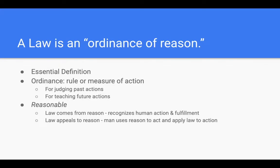That's essentially what it means for a law to be reasonable. Law first and foremost should come from reason, meaning a law should recognize human action and its fulfillment. The human person is directed by reason to the fulfillment of our being. We've talked about the purpose of the human person being happiness — ultimate fulfillment. Reason is nothing other than recognizing that fulfillment and directing all of our actions to it. Certain actions will be conducive to that, and certain actions will not be. In a sense, we're kind of creating a law for ourselves.